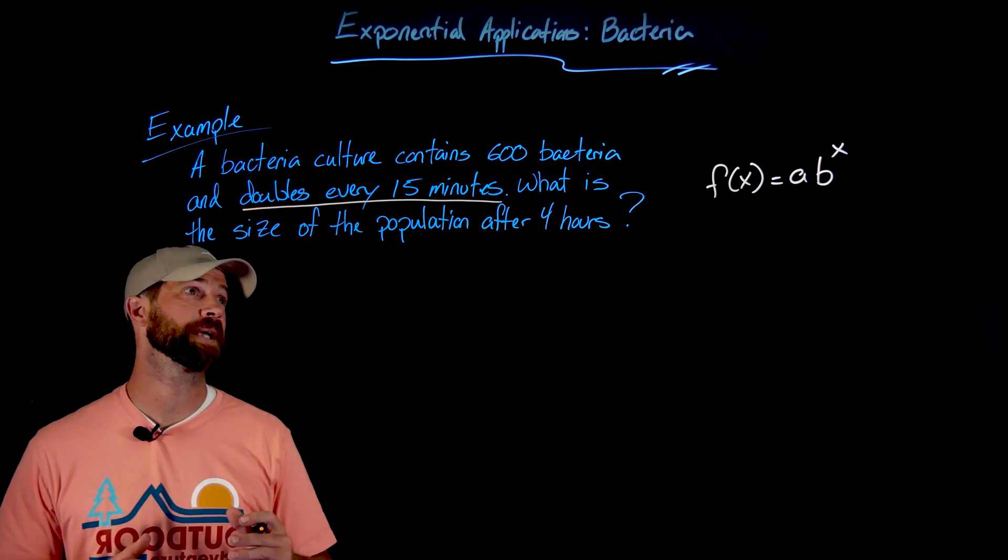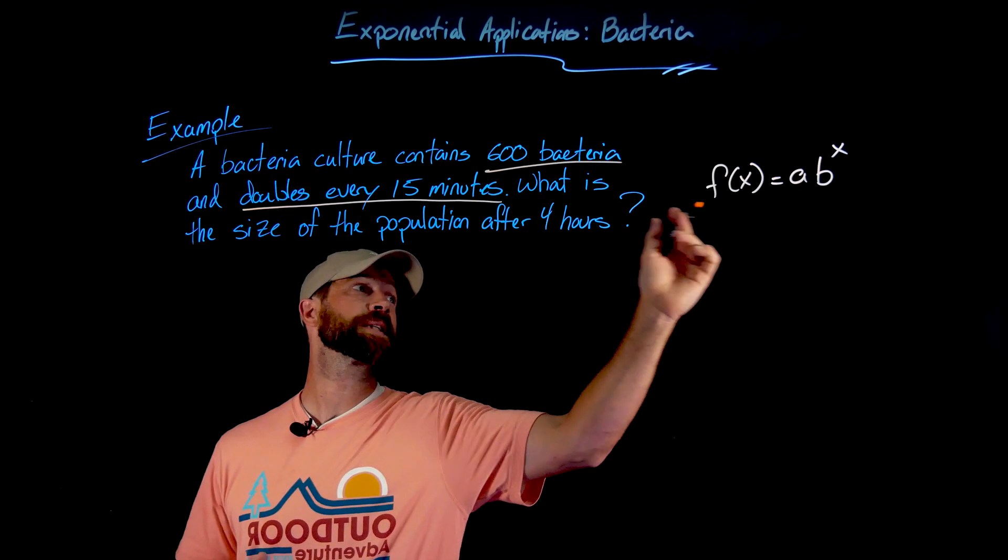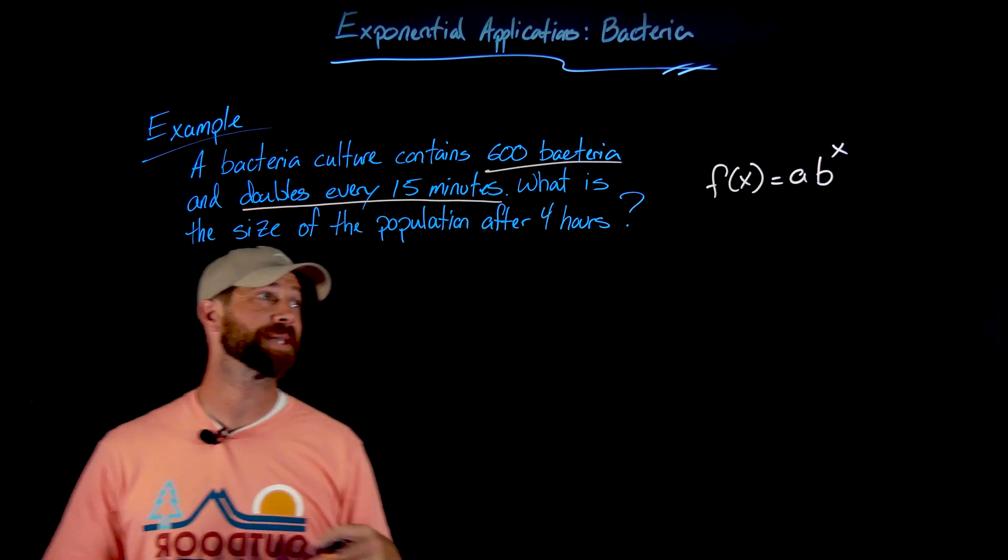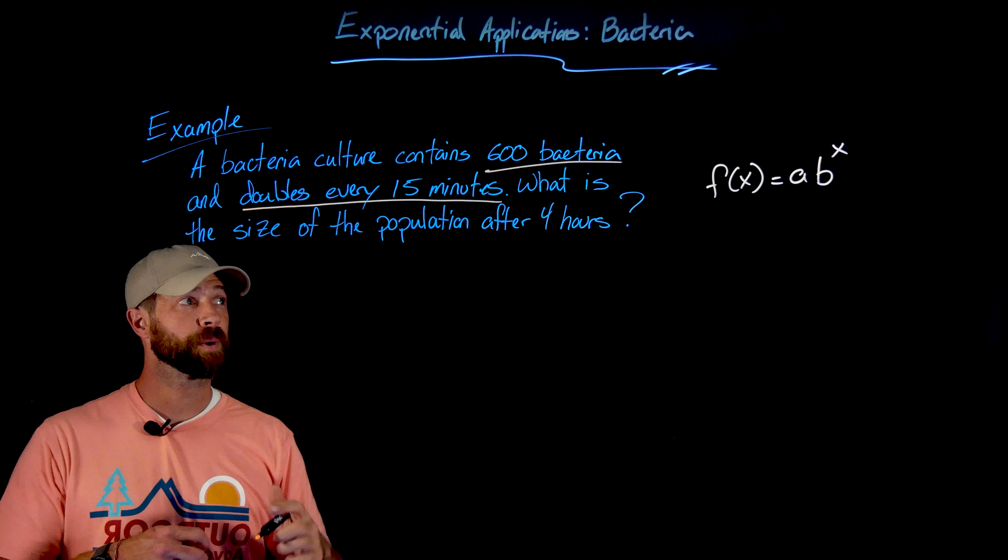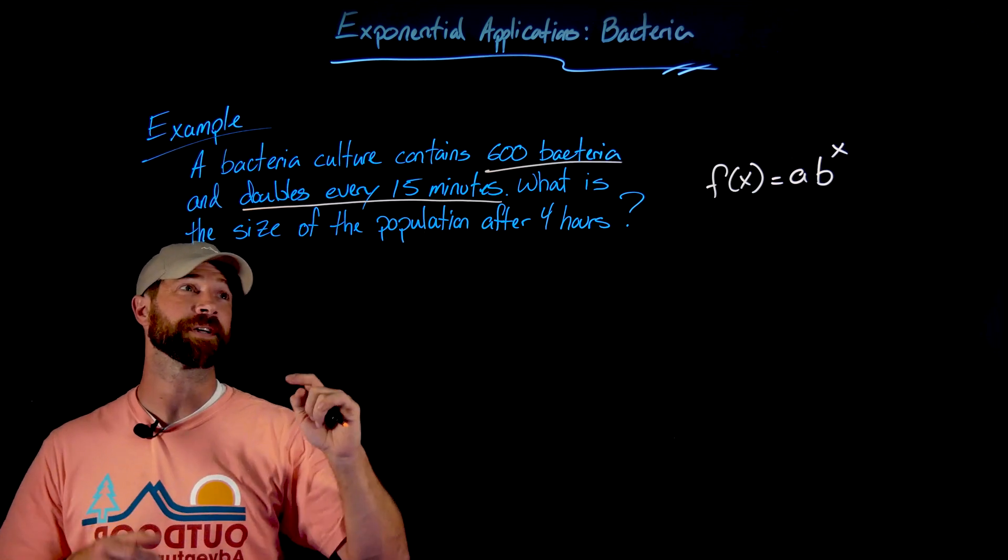In this important case right here, we know that 600 will be the initial amount, so this is the a value. And since we're doubling, b is going to be this exponential factor. What we're going to have to do is play around with our exponent to deal with this 'every 15 minutes.'